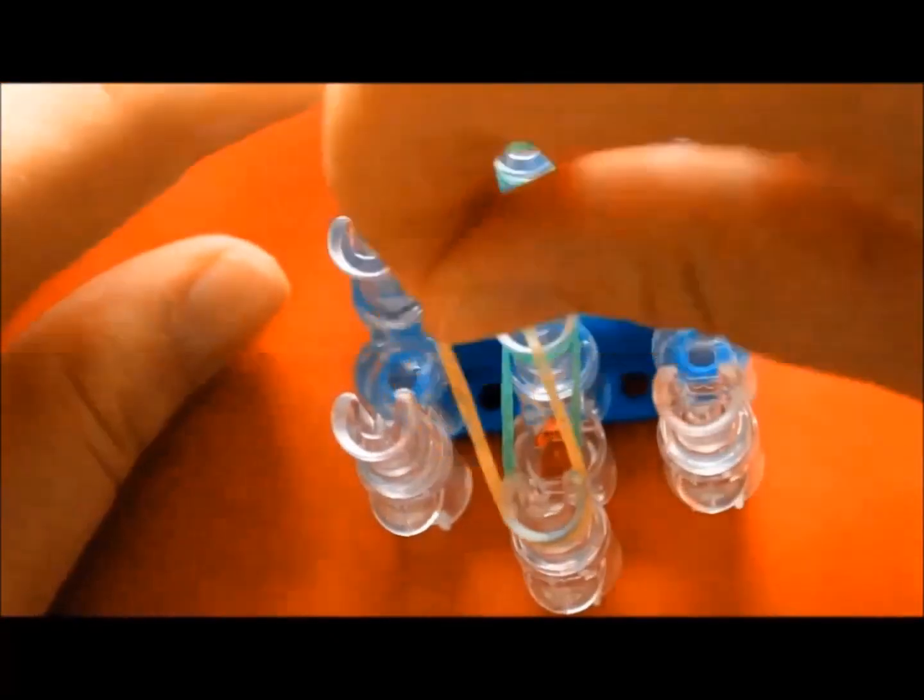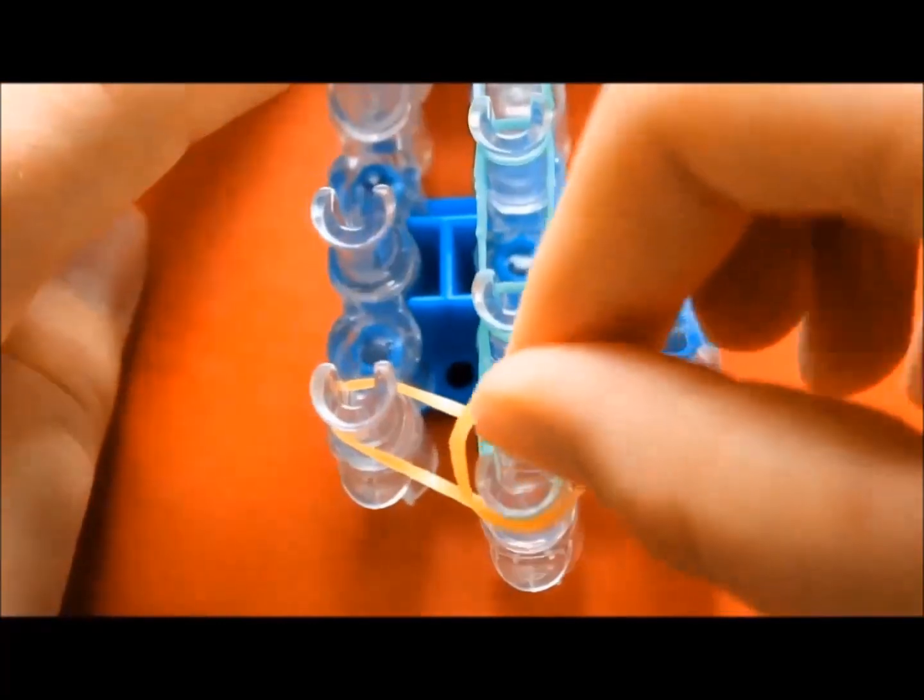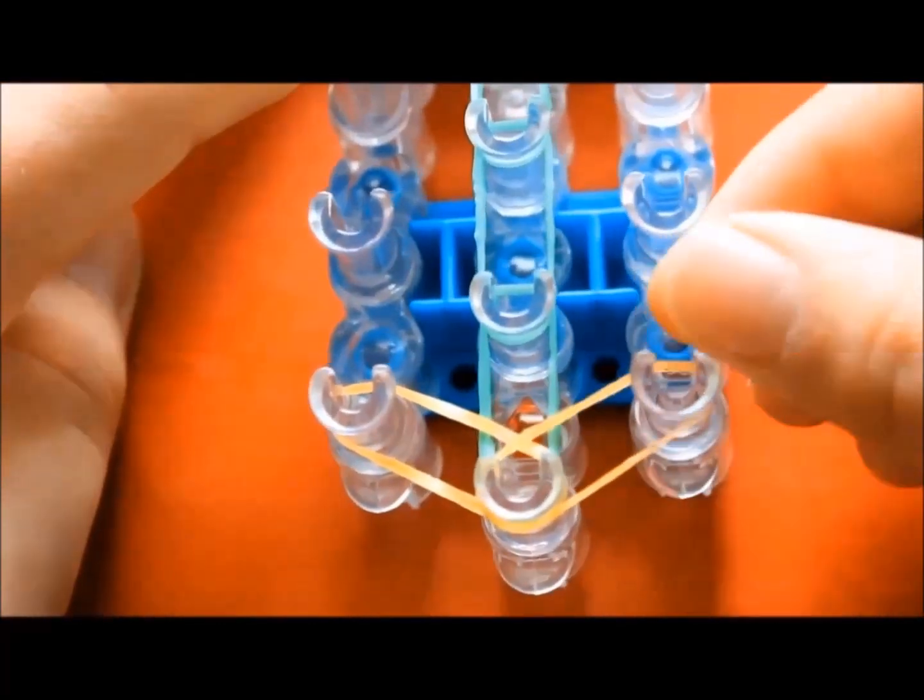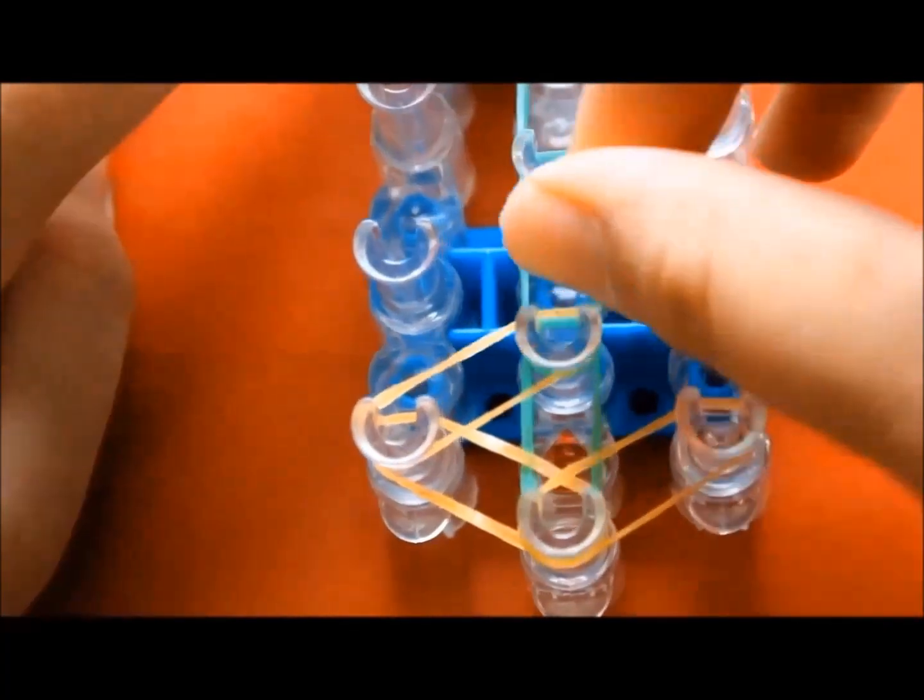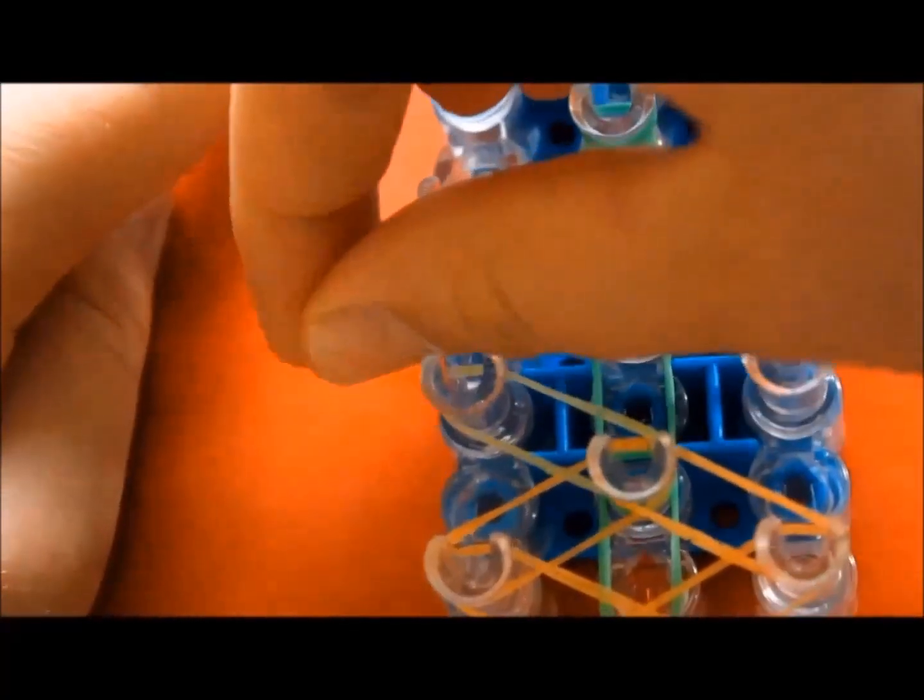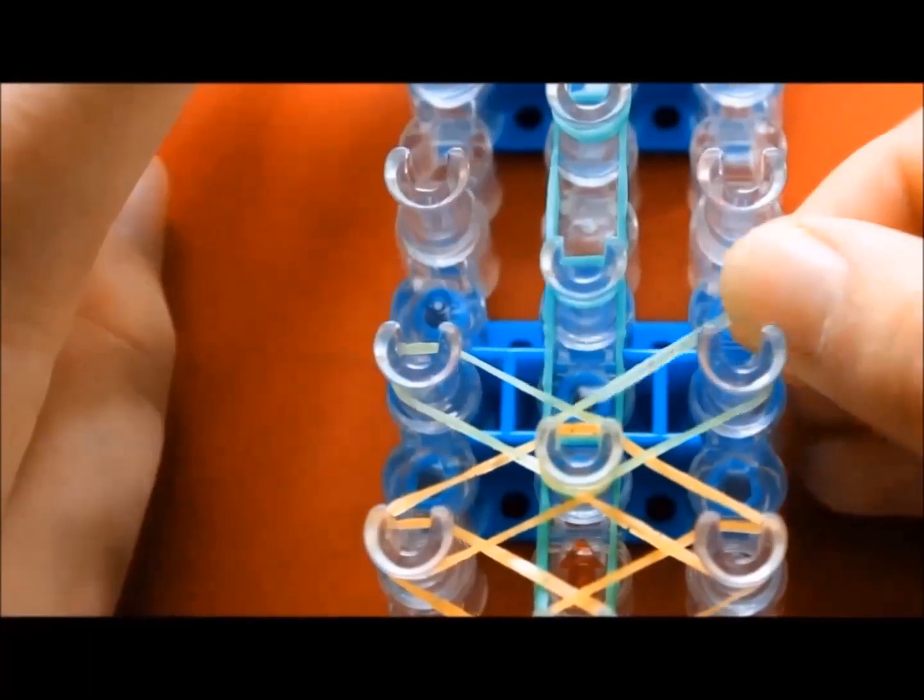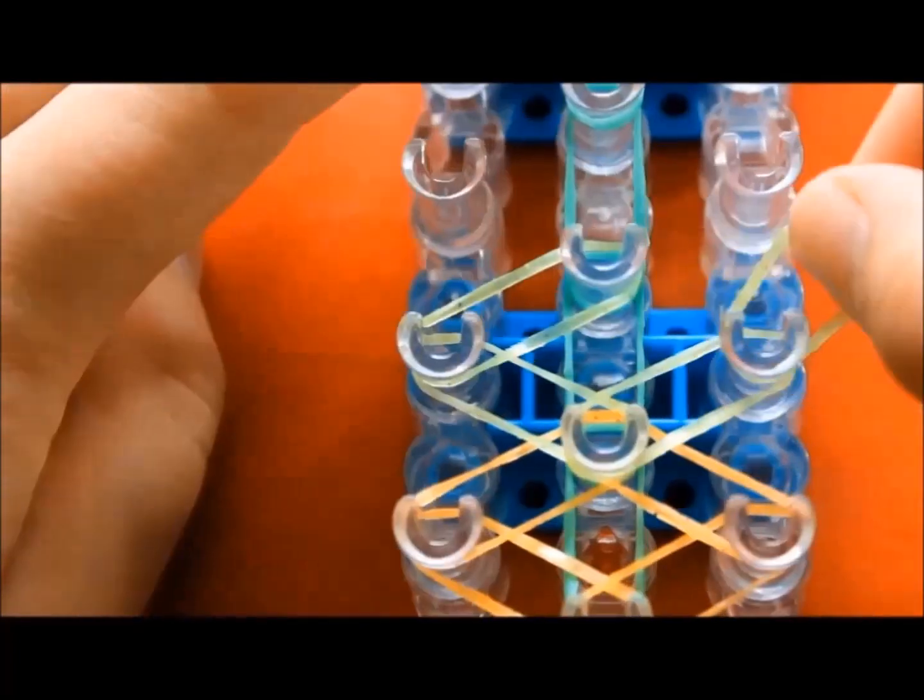Next, you will place four bands of your second color in a diamond pattern. Repeat it with your third color. Repeat this pattern till you reach the end of the loom.